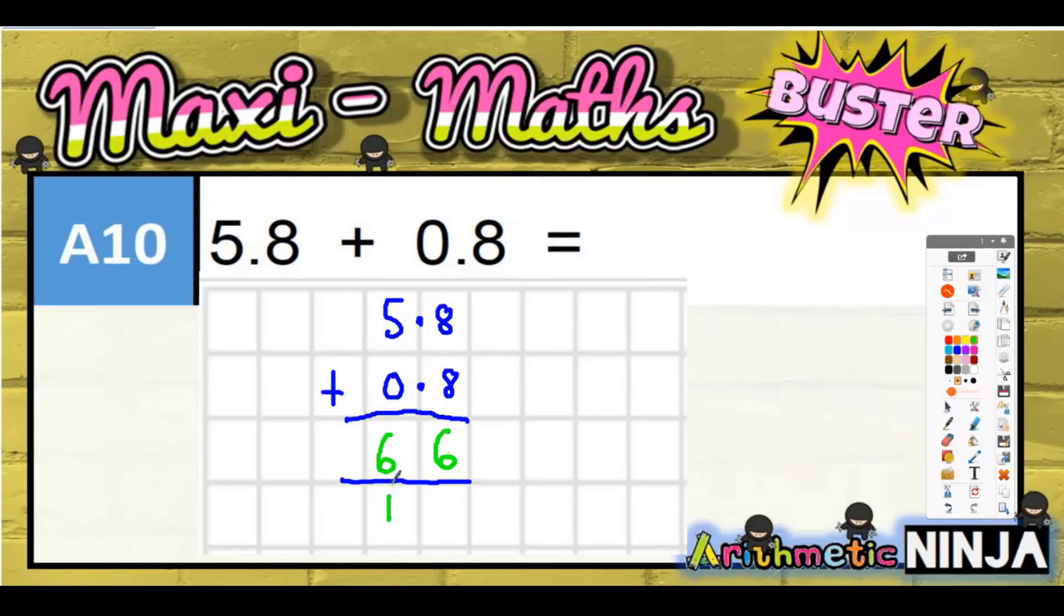Now obviously you can't leave it as 66. These two decimal points here - your decimal point in your answer lined up with those, so your answer is going to be 6.6.